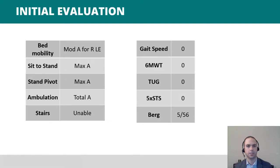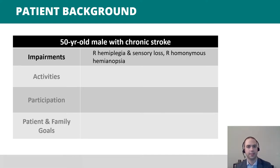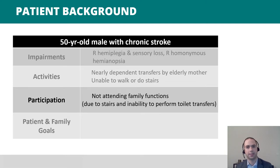This slide describes his mobility function and initial outcome measures, for which he scored a zero except for the Berg, where he was able to sit independently and transfer with the assistance of one person. Regarding the patient status across the ICF domains, he did have significant right hemiplegia and complete sensory loss, along with a right visual field cut. His elderly mother assisted him with nearly dependent transfers, and he was not able to walk or negotiate stairs. Due to his mobility deficits, he complained of not being able to attend family functions, largely due to barriers of stairs and unfamiliar toilets.